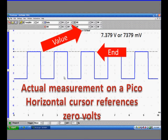We're going to use our zero volt as a reference. We bring the top cursor down. It becomes the end. The start isn't shown in this particular case because the Pico assumes zero as the starting spot. This display reads 7,379 millivolts. Remember, there's a thousand millivolts per volt.